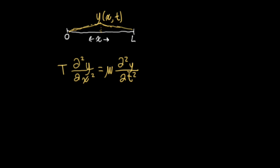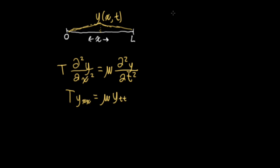Note that I haven't written the explicit dependence on x and t here. You'll also see this expression written as T·y_xx = mu·y_tt — that's another notation you'll see. The string is fixed at the nut and the bridge, so we have boundary conditions: for all t, y(0, t) and y(L, t) — the displacement of the string at zero and L — is equal to zero for all time. So the ends of the string are fixed.